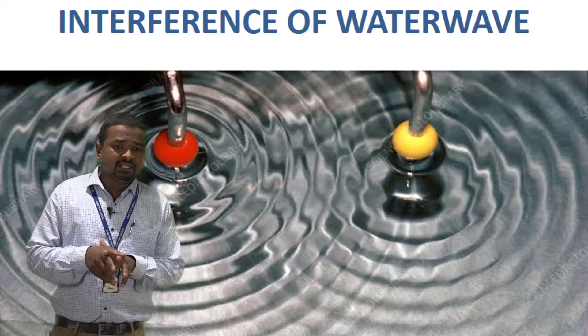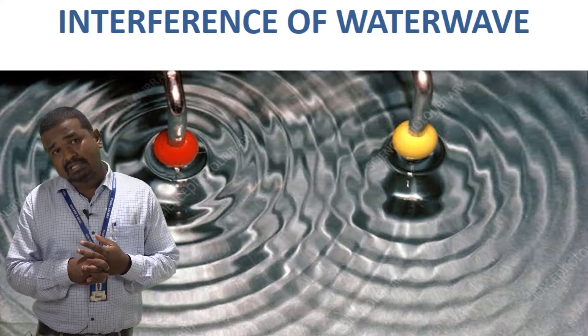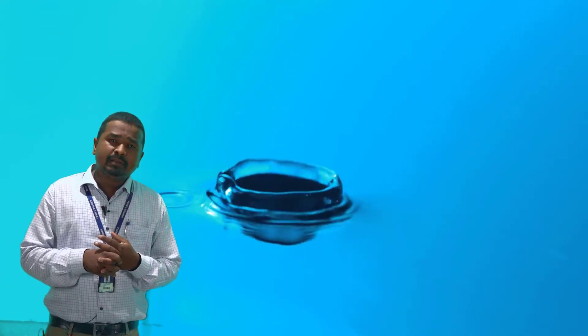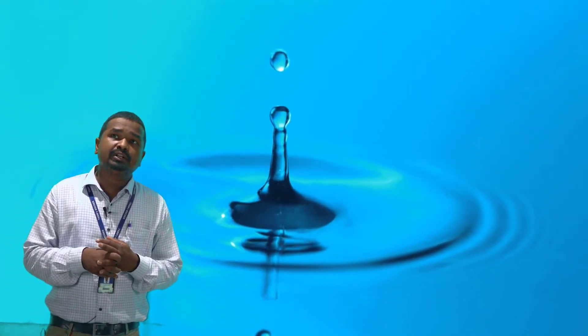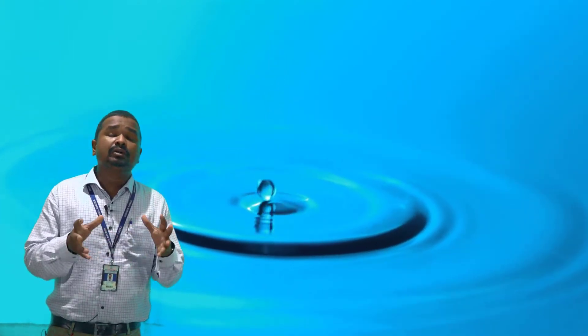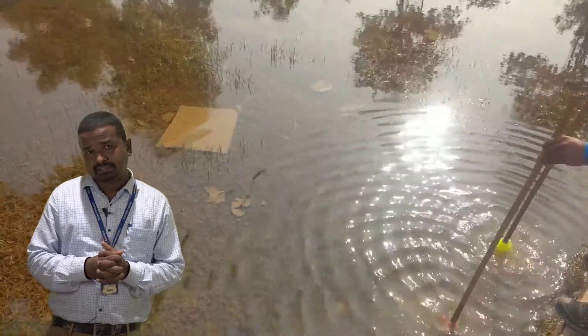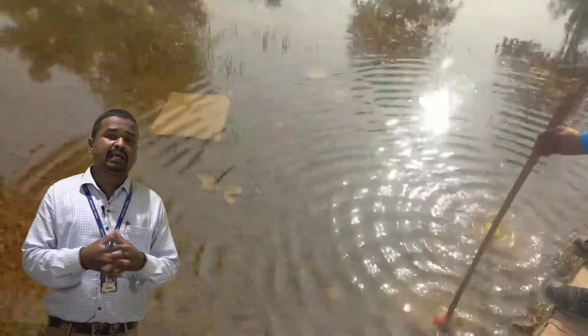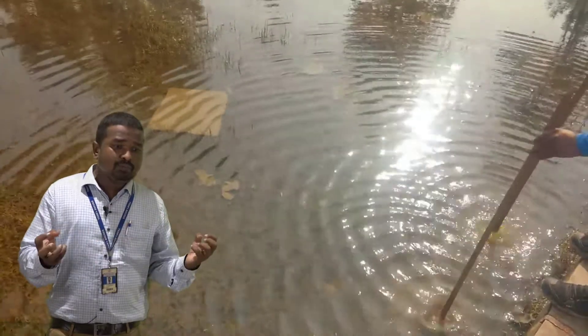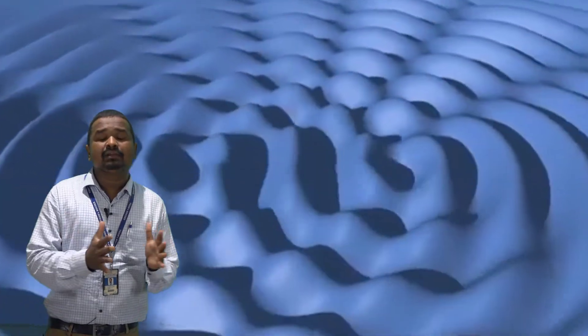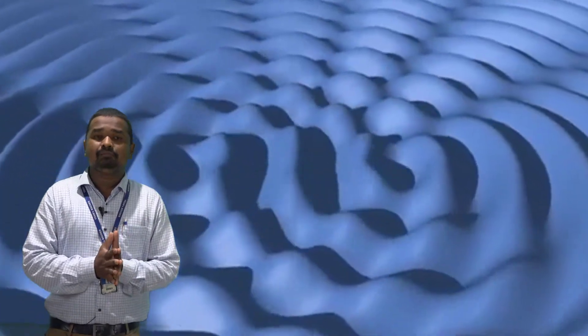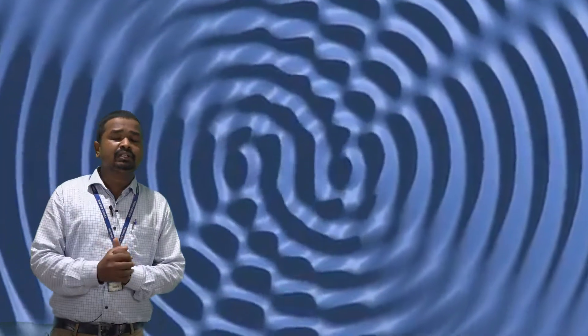The next example is interference of water waves. Water waves are formed after a disturbance is created on the water surface. But if we tap the water surface at two different points at the same time, every point will generate waves that travel outward. The portion of waves traveling towards each other will mix and produce a mixed pattern of waves — and that is nothing but interference.